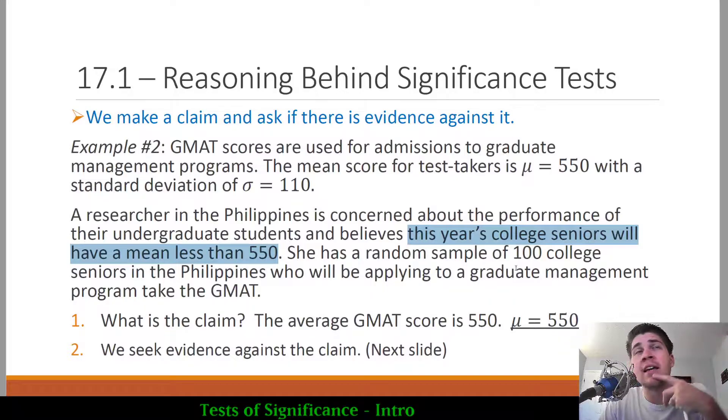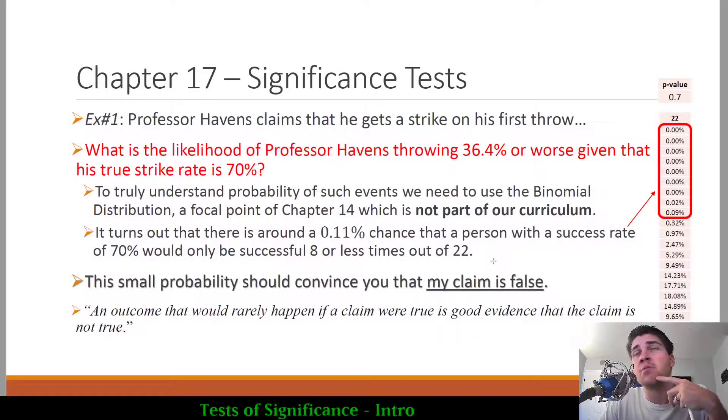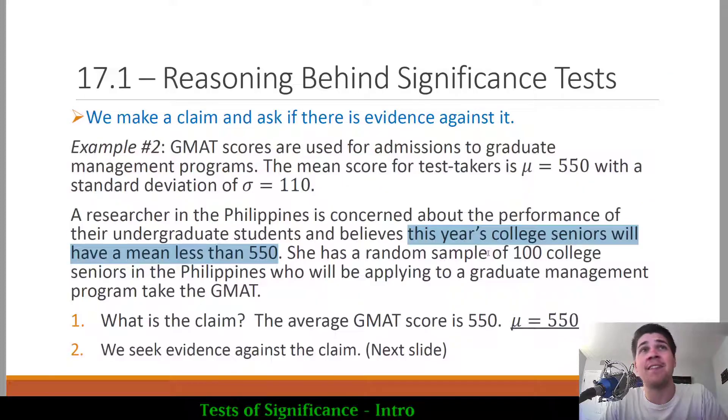Is there some claim? Like in the previous example, the claim was Professor Havens could bowl 70% strikes. The evidence was different. The evidence said that's probably not the case. And that's what we're going to be seeking to do again in this example. The claim is that the average of test takers is 550. We believe that the Filipino students this year will be less than that.